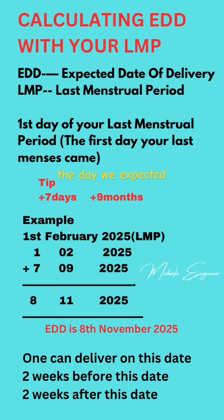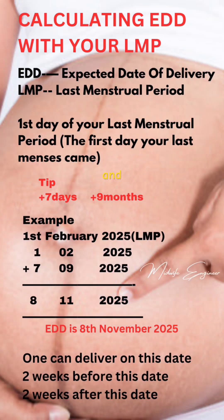So with that scan, we can calculate the day we expected to deliver ourselves using our LMP, that is our last menstrual period. And with this, we just need the first day that our last period came.